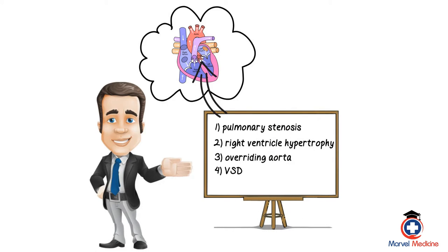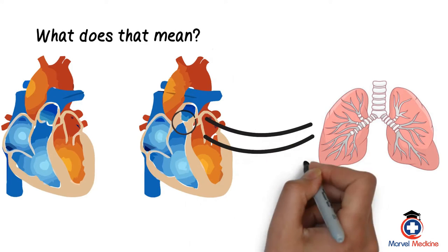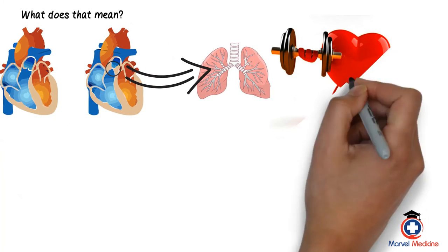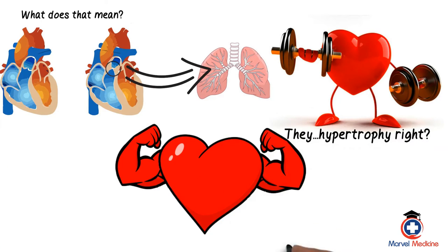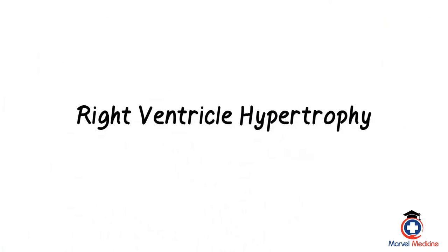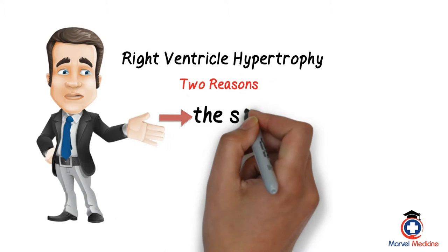You know the direction blood normally goes — now let's take a look at this. First, pulmonary stenosis: imagine the pulmonary artery is narrowed. What does that mean? It's harder for the right ventricle to pump blood to the lungs. What do we know about muscles that work hard? They hypertrophy — they get bigger — which leads us to the second thing: right ventricular hypertrophy. There are two reasons why this would happen. First is the stenosis causing the ventricle to work harder and harder.